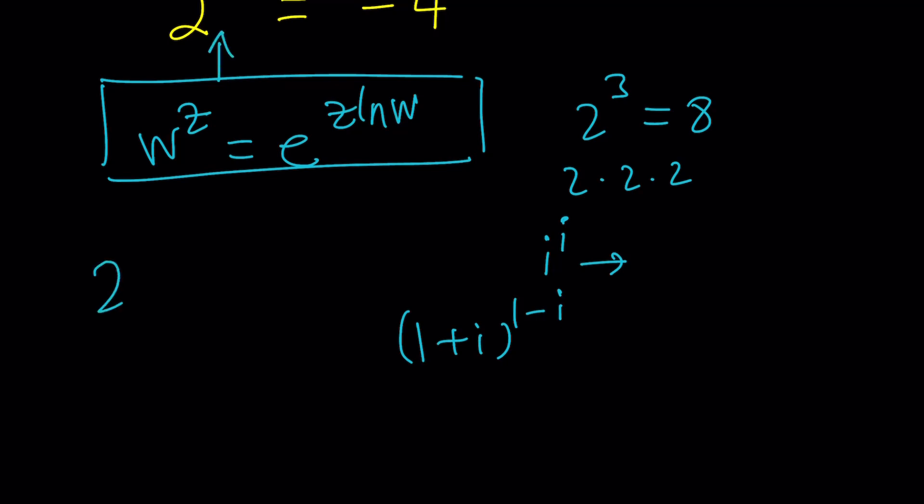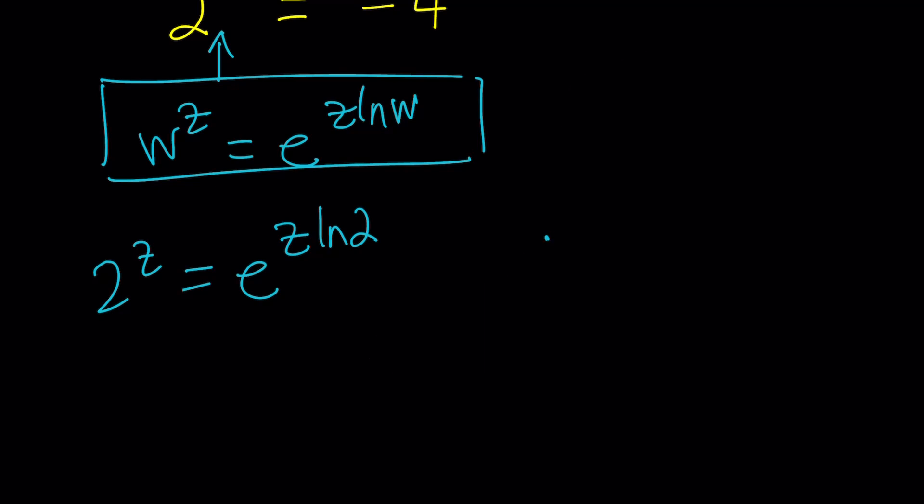So 2 to the power z can be written as e to the power z ln 2. Here ln 2 is a real number and z is a complex number. Okay so far so good.